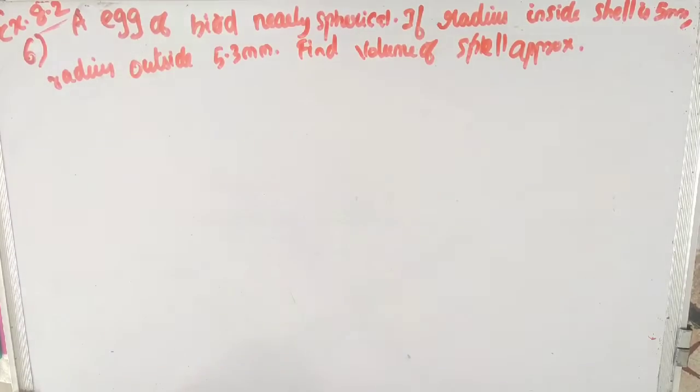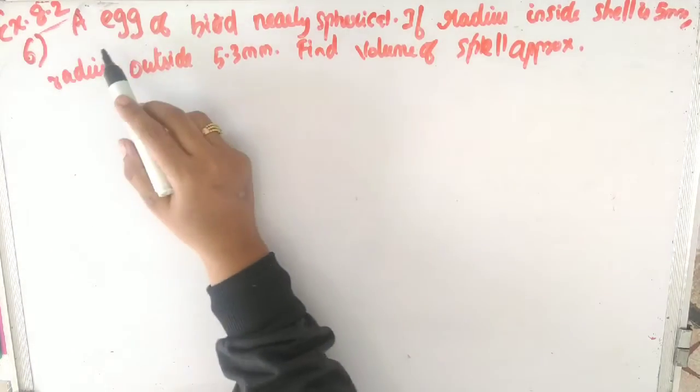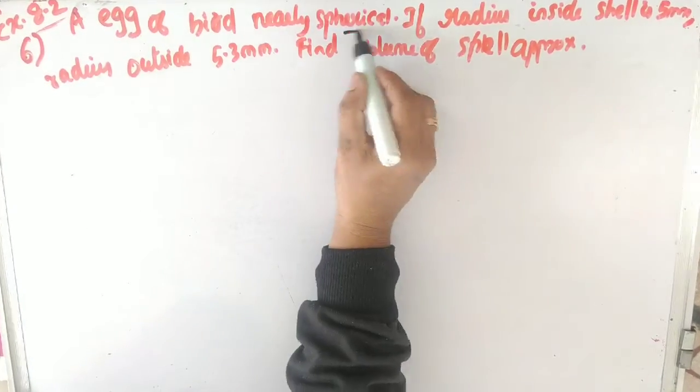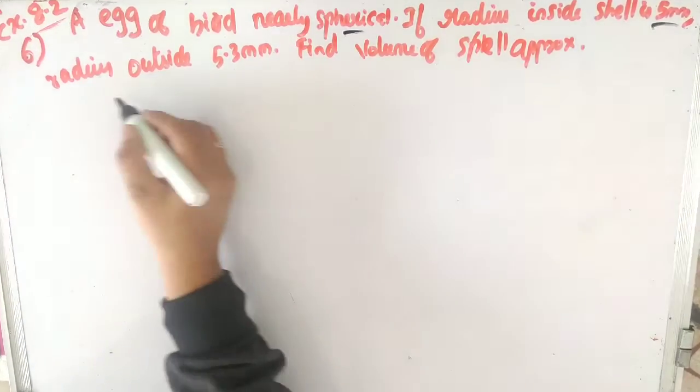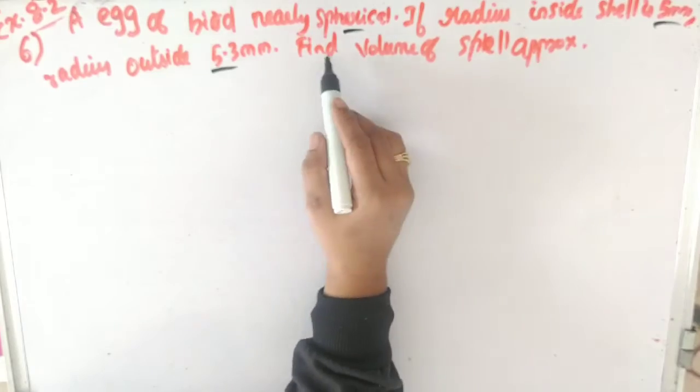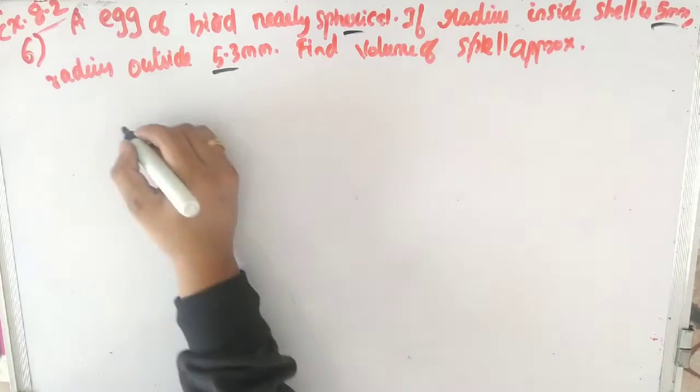Hi everyone, this is the 8.26 problem. An egg of a bird is nearly spherical. If the radius inside the shell is 5mm and the radius outside the shell is 5.3mm, find the volume of the shell approximately.